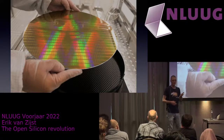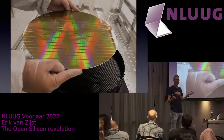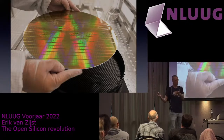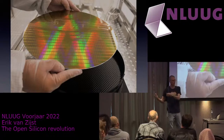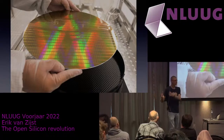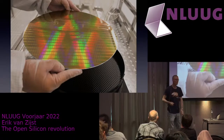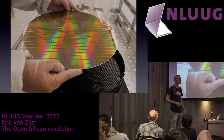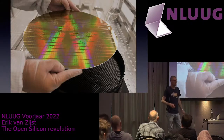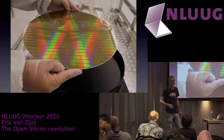130 nanometer, by the way, for comparison — that is, I believe, what the Pentium 4 used. So people say today you have 7 nanometer chips, and it's a lot smaller, but this Google program uses a 130 nanometer process node.